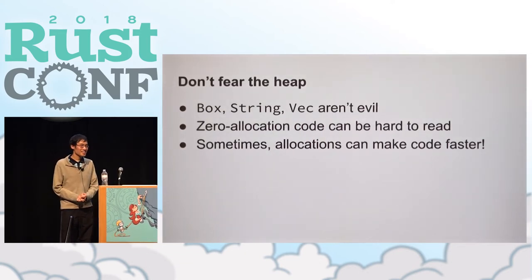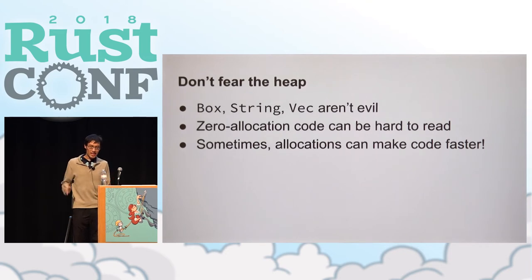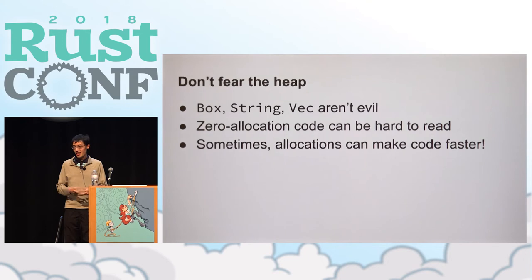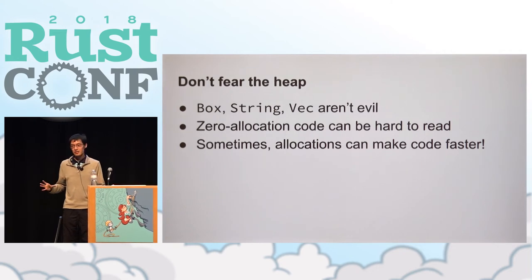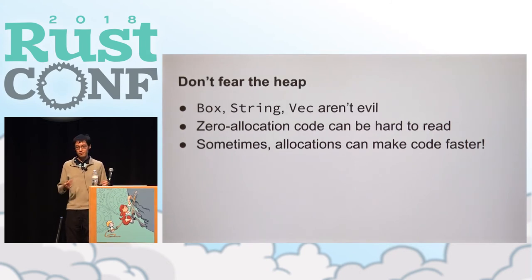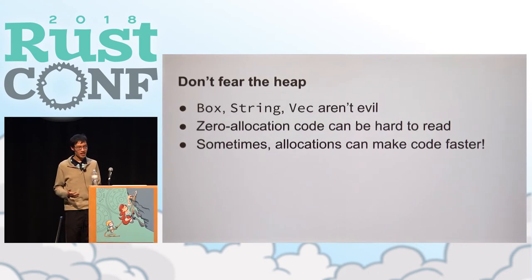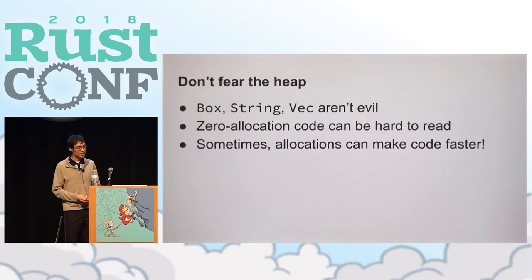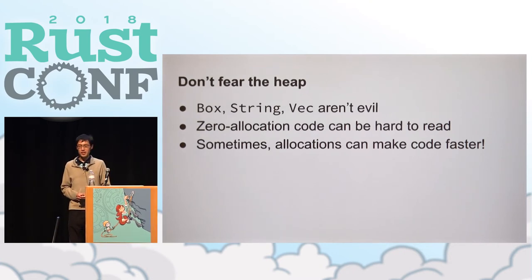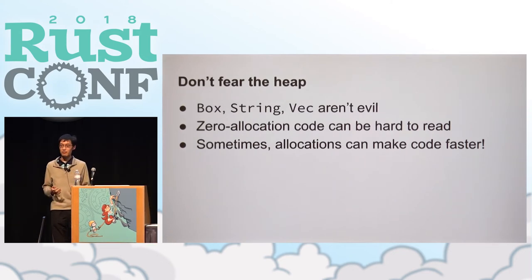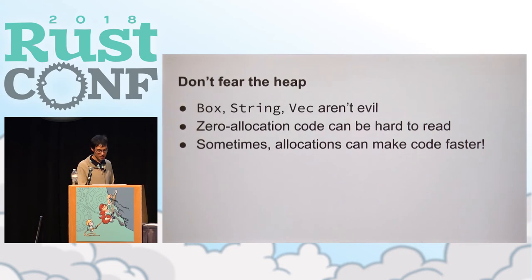Another piece of advice: don't fear the heap. By the heap I mean structures like Box, String, and Vec, which let you choose an arbitrary size for a data structure at runtime. The nice thing about Rust is it lets you avoid heap allocations altogether if you want to — but that doesn't mean you have to, and in fact zero-allocation code can be much harder to read than the equivalent code that does allocate. Without benchmarking, it's hard to tell whether avoiding allocations actually makes your code faster.